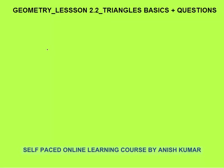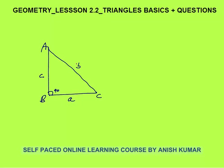Let me discuss what is a right angle triangle. We have triangle ABC where this is a 90 degree angle. This length is A, this length is C, this length is B. In a right angle triangle, B squared is equal to A squared plus C squared — this is the Pythagoras theorem.